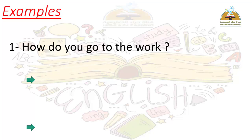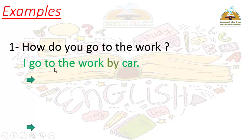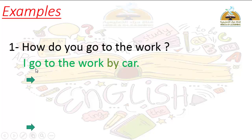Number one: How do you go to the work? — meaning كيف تذهب إلى العمل. Here I have the question word How, then the helping verb Do, then the subject You, then the verb in the infinitive: go, and the rest of the sentence, with a question mark at the end.